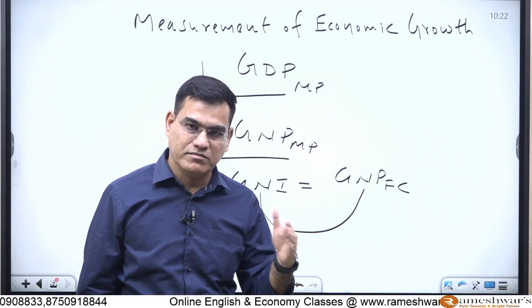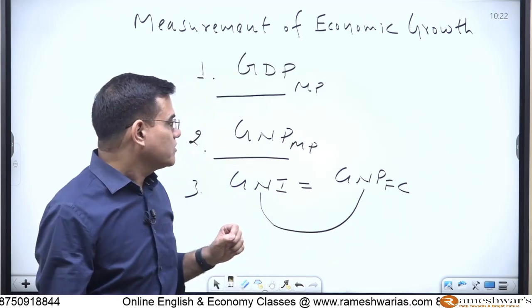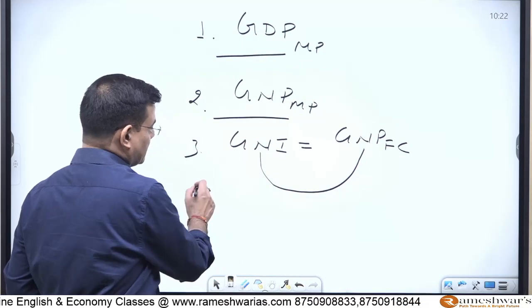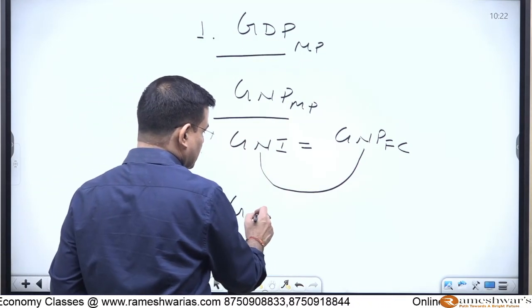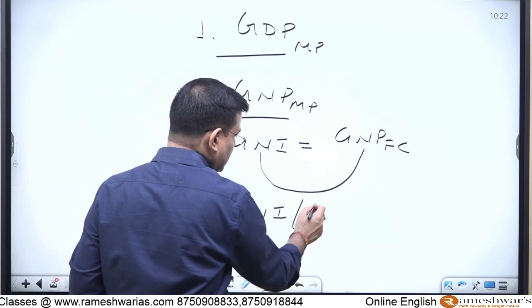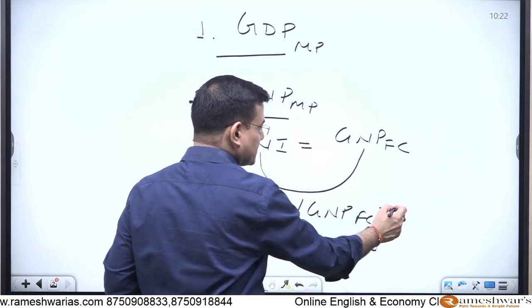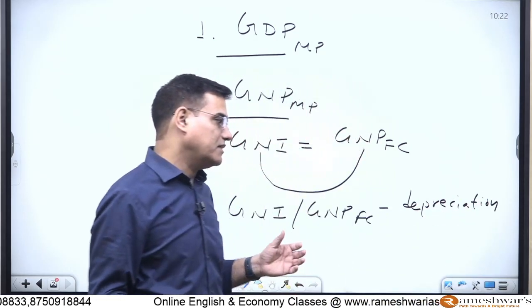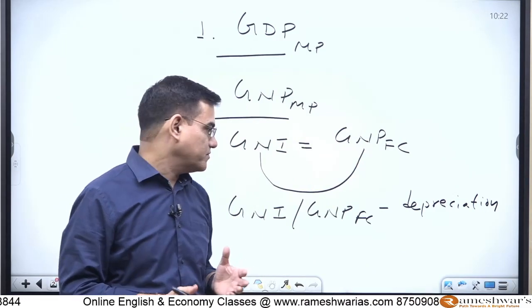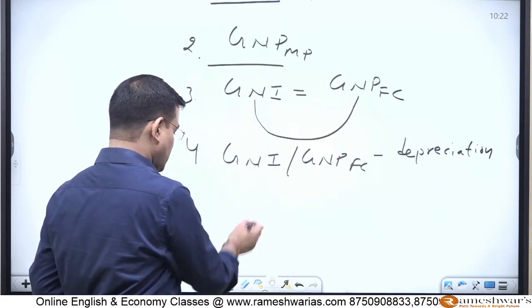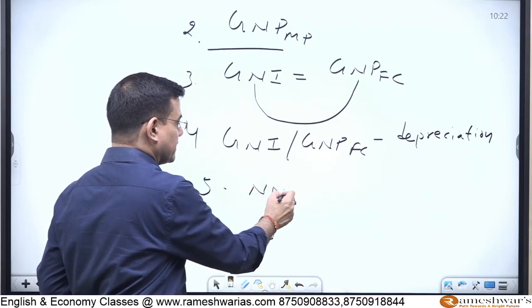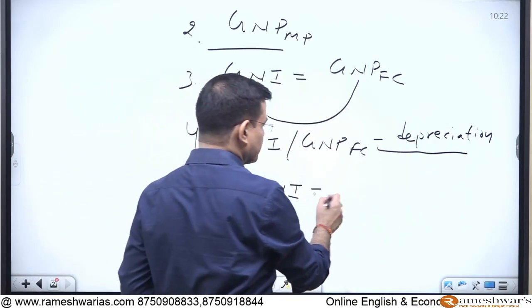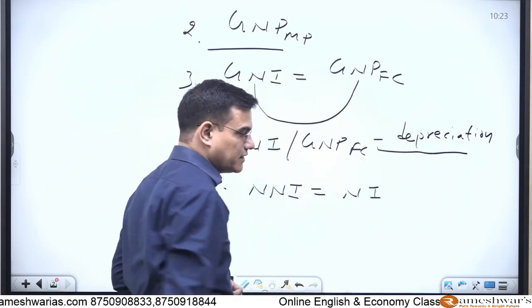Whatever you pay to factors is income earned by those factors. So people talk about GNI or GNP at factor cost. If you then remove depreciation on machines from GNP at factor cost, you get NNI — net national income. NNI is also called NI, national income.